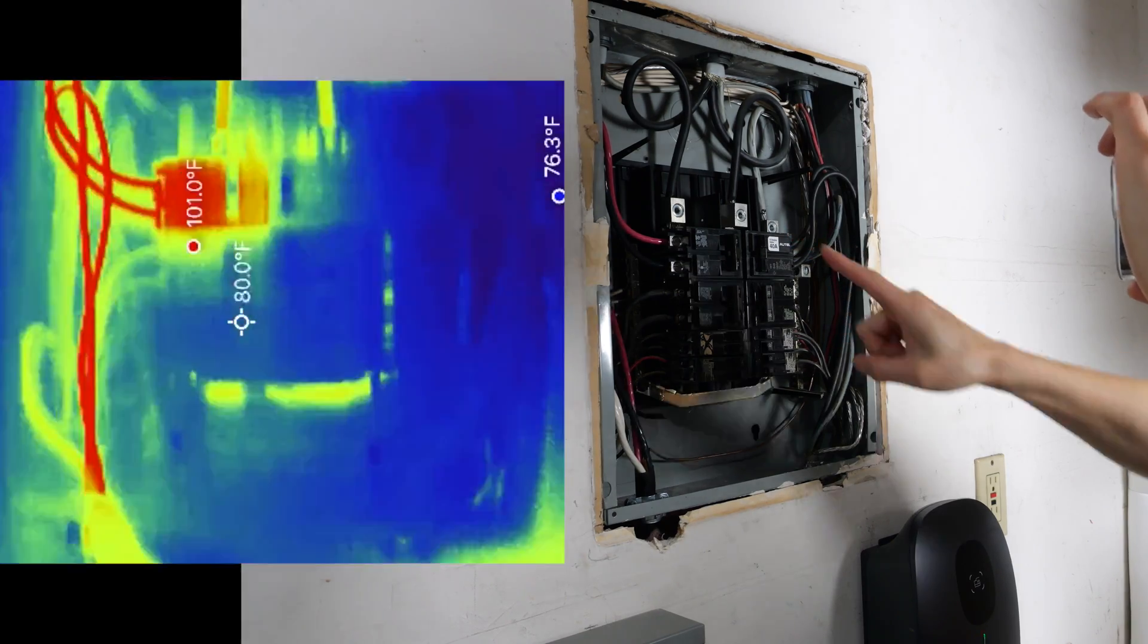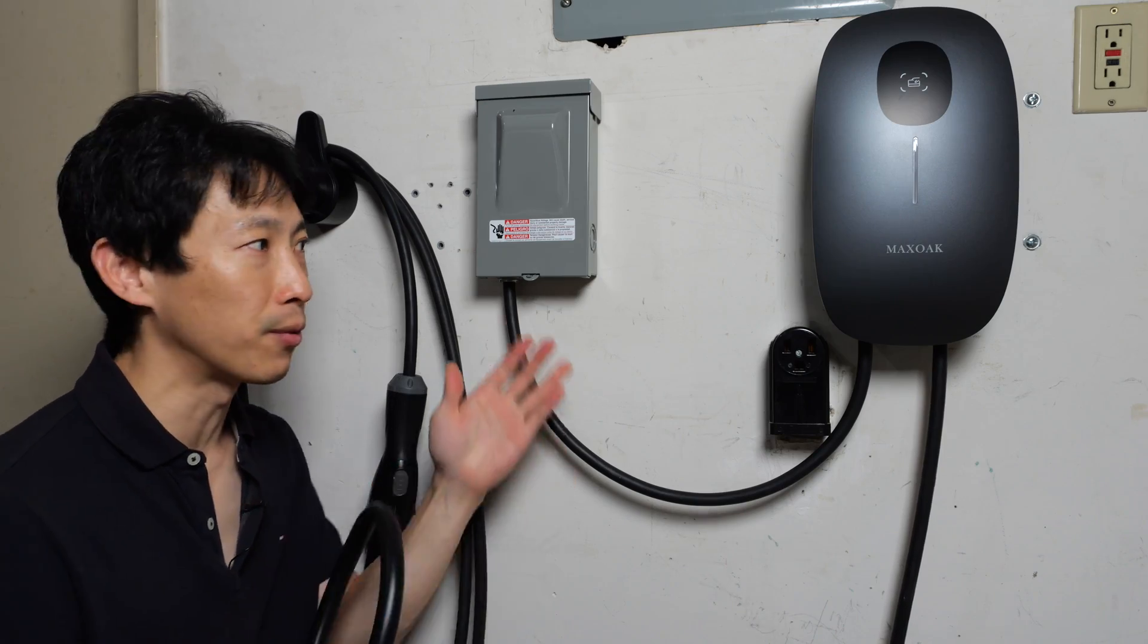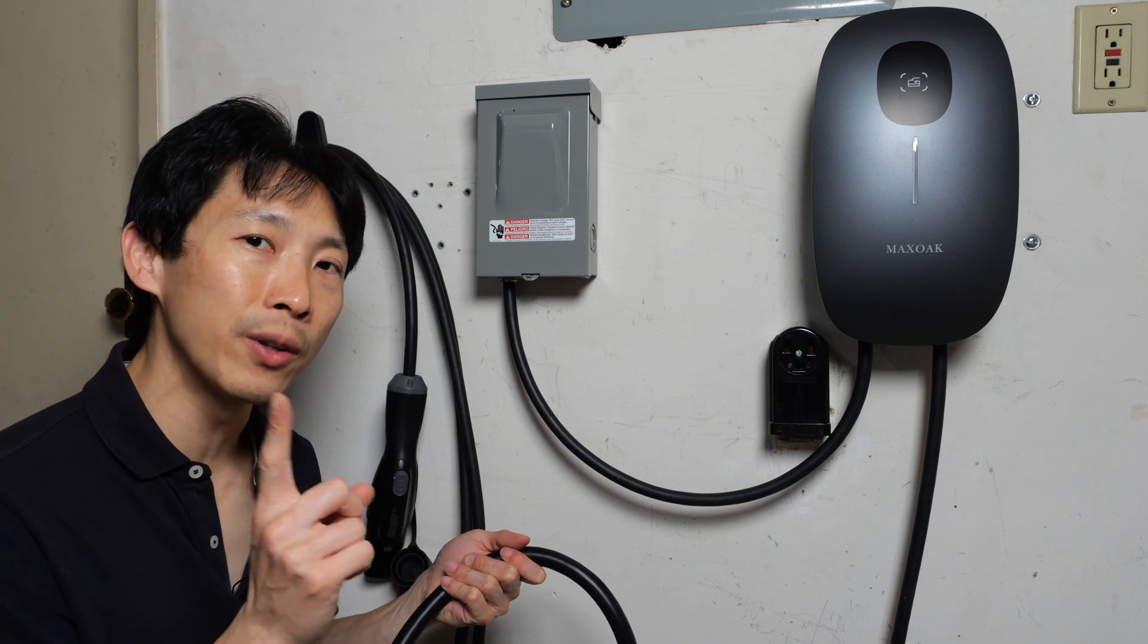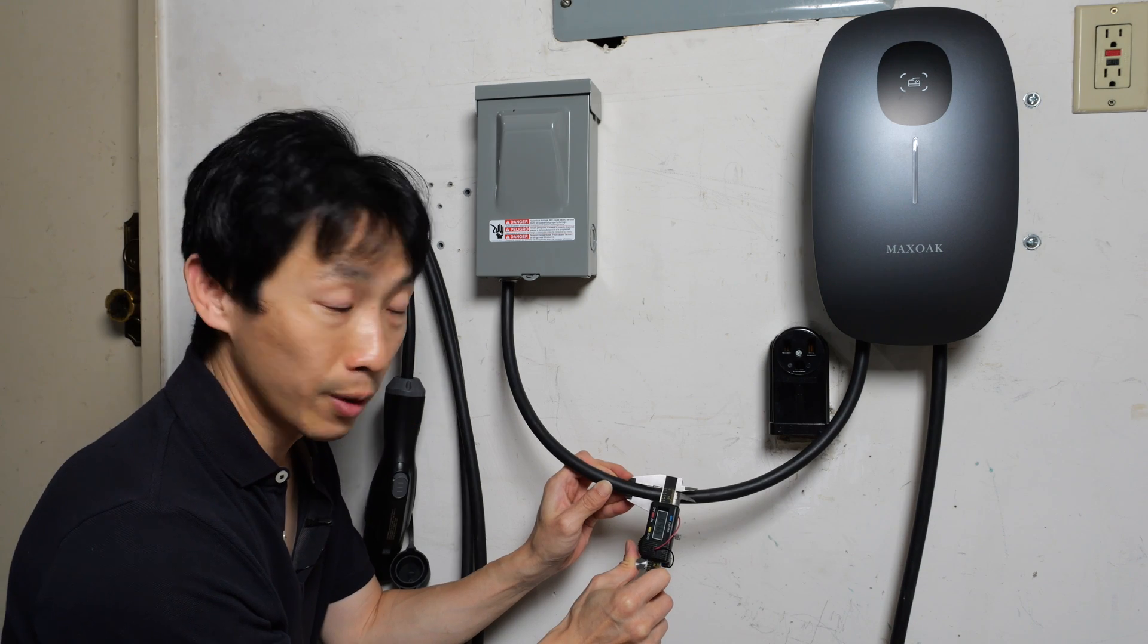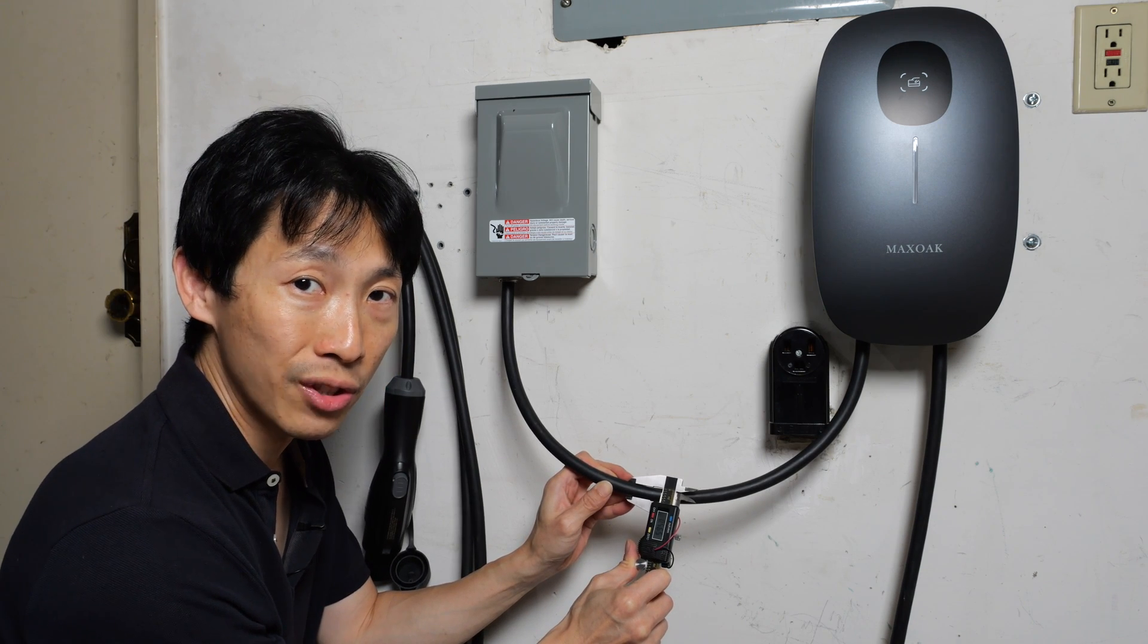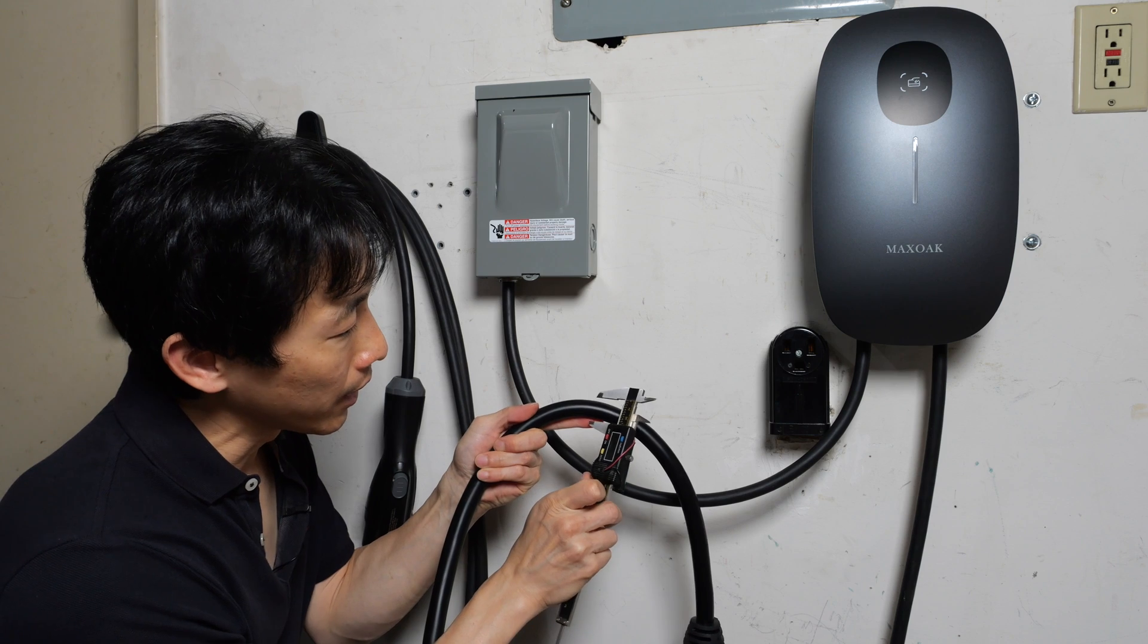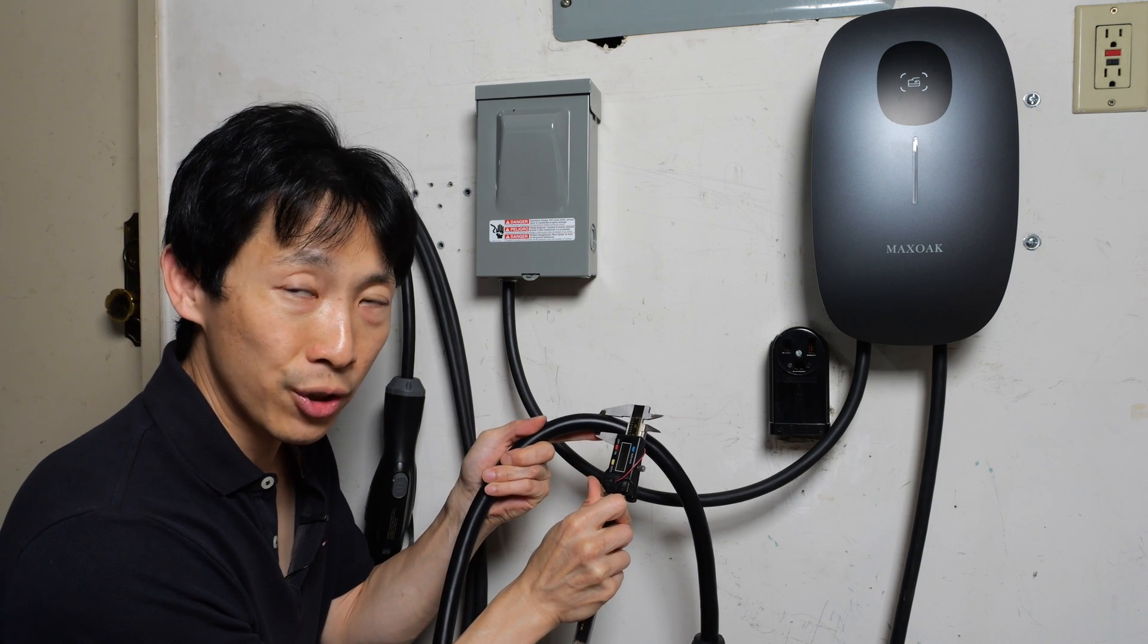This is the one I've been using before this hardwired one. And there is one noticeable difference, which is the thickness of this wire. The MaxOak is about 0.57 inches in diameter. The competing one is about 0.71 inches in diameter.